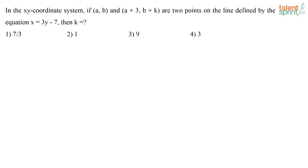In the xy coordinate system, if (a, b) and (a + 3, b + k) are two points on the line defined by the equation x = 3y - 7, then k is equal to what?